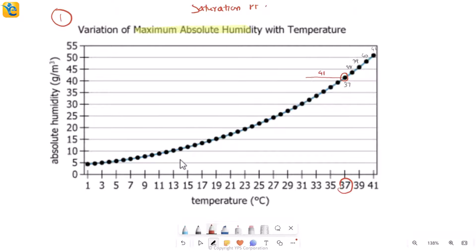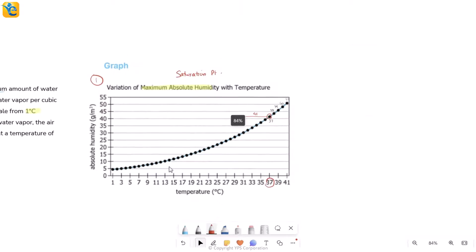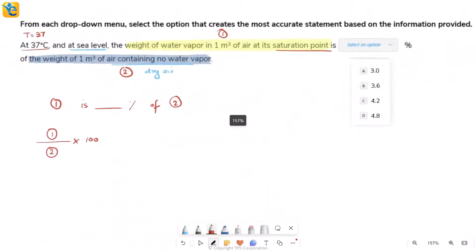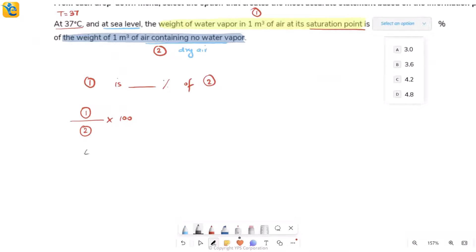When you try to read this value here on the Y axis, this is about 41. So then maximum weight of water vapor is 41, which is what my first quantity was. I'll just replace this by 41 and remember this is grams.